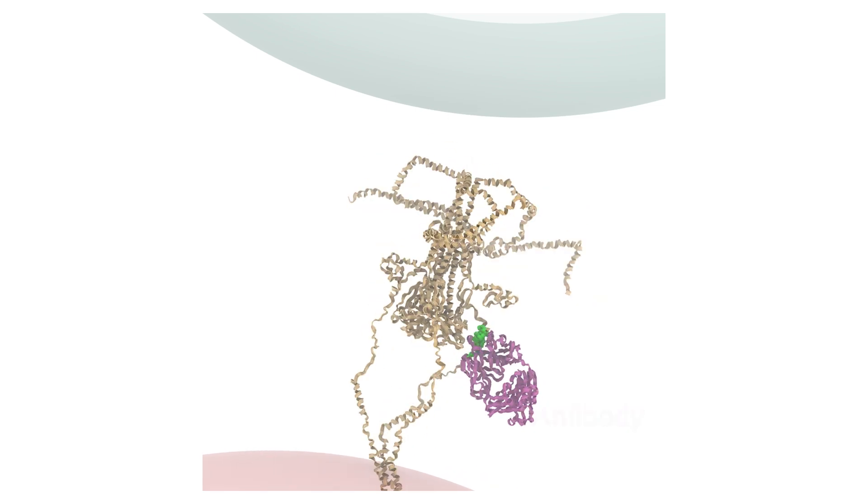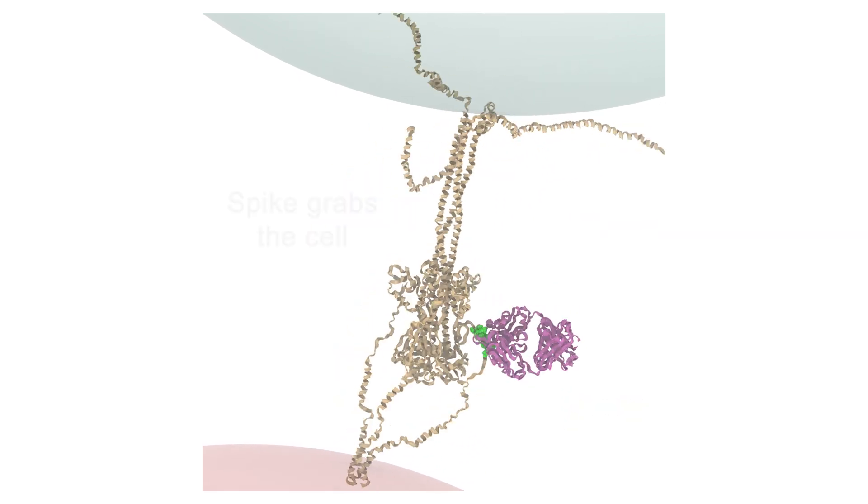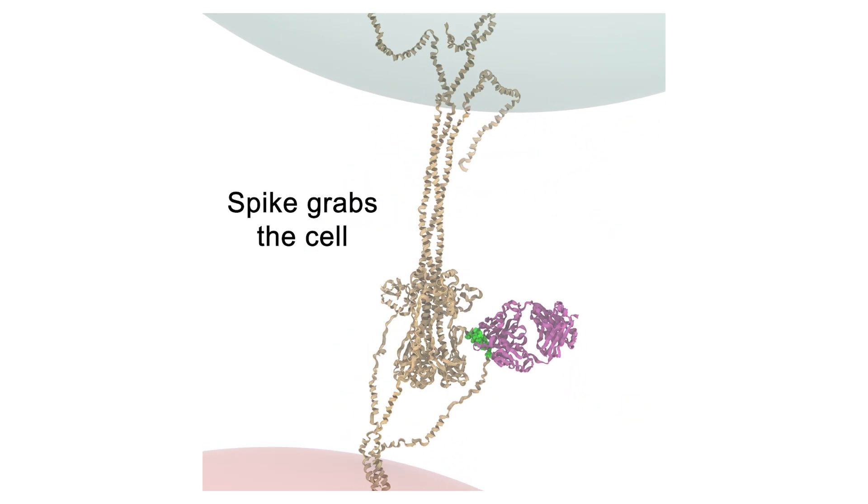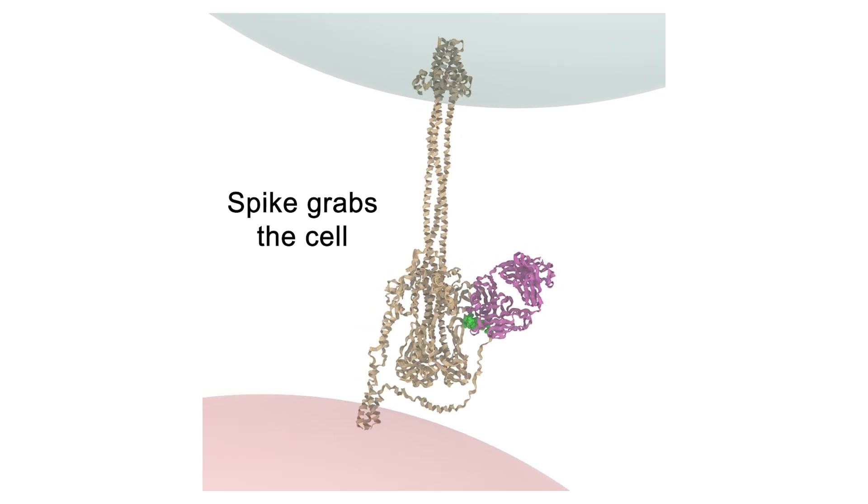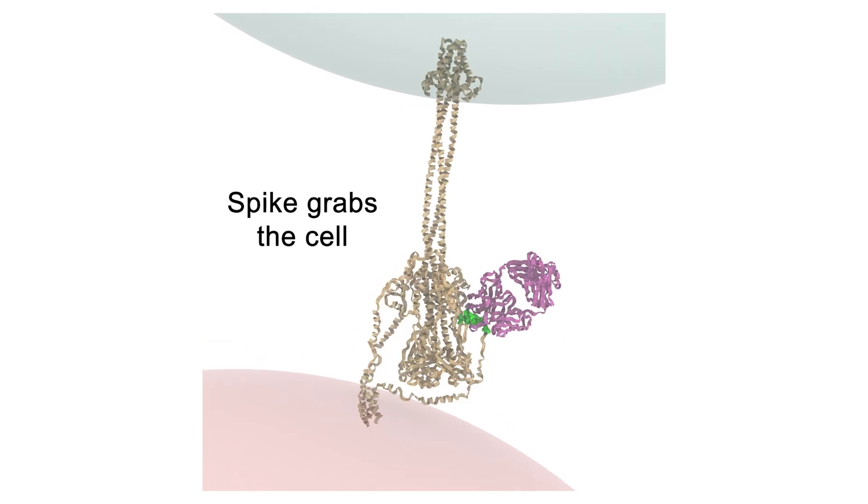When it is bound, the spike is still able to reach the host cell. However, it is unable to pull the virus all the way back to the cell, as it does when the antibody is absent.